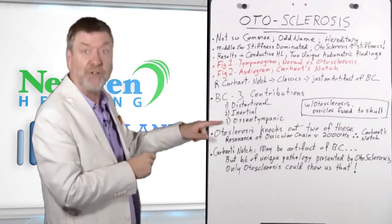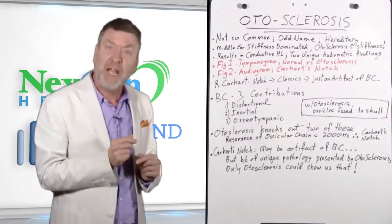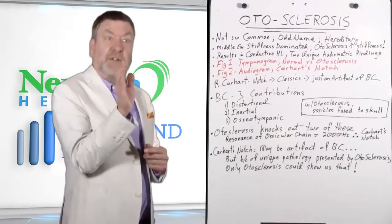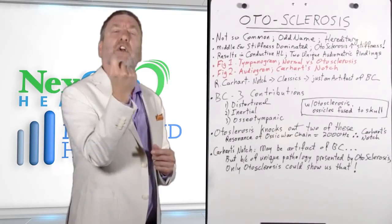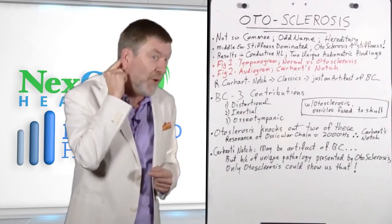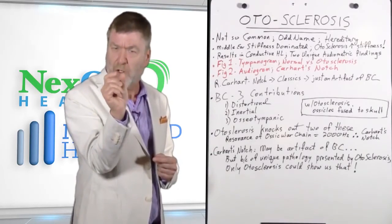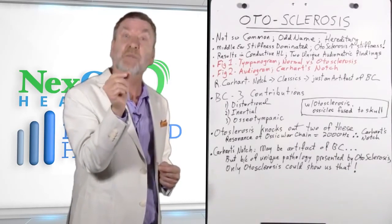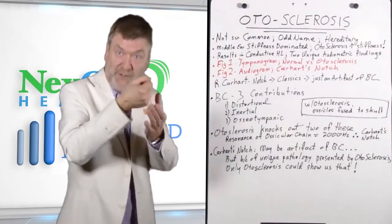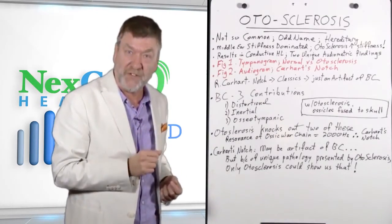A third contribution to normal hearing by bone conduction is osseotympanic. Again, because you're vibrating the mastoid with an oscillator, you're creating a tiny column of air movement in the outer ear canal. This occurs as a result of vibrating the skull ever so slightly. And that little moving column of air pushes against the tympanic membrane, against the ossicular chain, thus in and out of the oval window with the footplate of the stapes. And that also slightly increases bone conduction sensitivity.